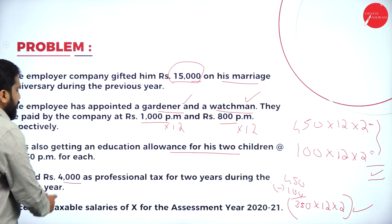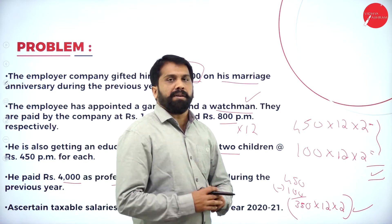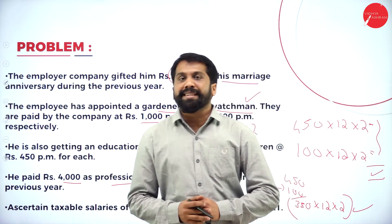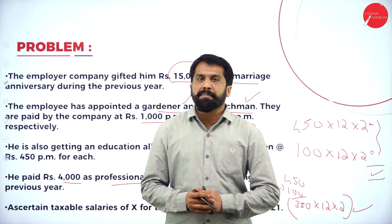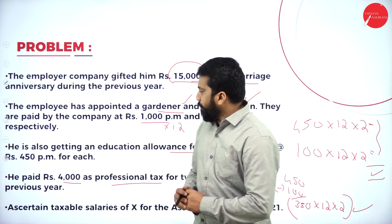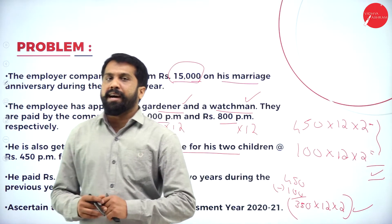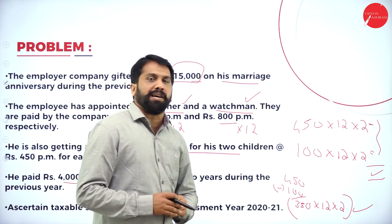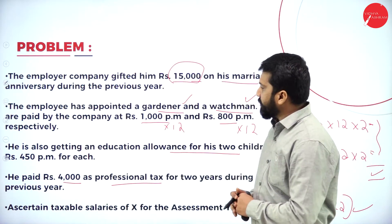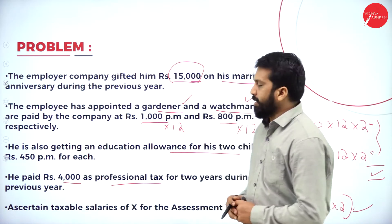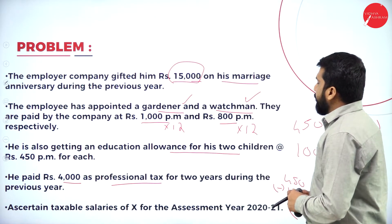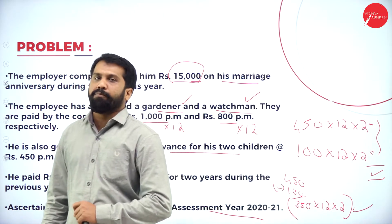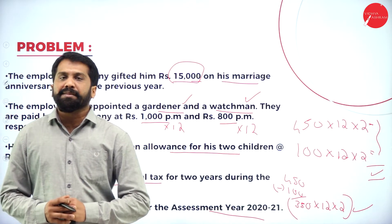He paid 4,000 as professional tax. Any professional tax or employment tax paid by the employee has to be deducted — it is a deductible claim. Whatever he paid, 4,000 towards professional tax, has to be deducted along with your standard deduction of 50,000. We are supposed to calculate the taxable income.